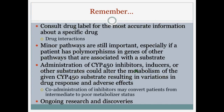Remember to consult a drug label for the most accurate information about a specific drug. We've touched on general recommendations, but if there's a specific drug in question, check the package insert or labeling to confirm drug interactions. Minor pathways are still important, especially if a patient has polymorphisms in genes of other pathways. Inhibitors, inducers, or other substrates can alter the metabolism of a drug, resulting in variations of drug response and adverse effects.